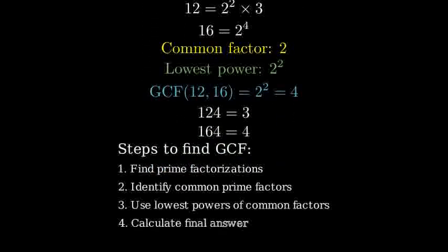To summarize, we found the GCF by first finding the prime factorizations, then identifying the common prime factors, and finally using the lowest power of those common factors. This gave us a GCF of 4.